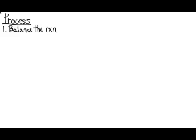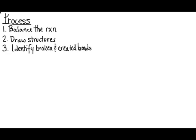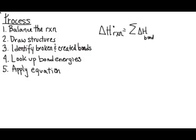The process that I'm going to use for all of these examples is: first I need a balanced reaction, then I need to draw structures, I need to identify the broken and created bonds, and then I'm going to look up the bond energies in a table, and I'm going to apply my equation. The heat of that reaction is equal to the sum of the bonds enthalpy for the bonds broken minus the sum of the bonds formed.